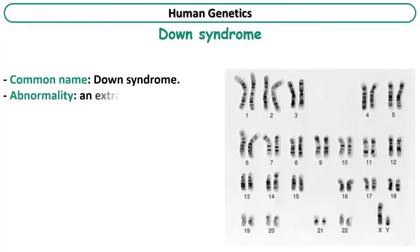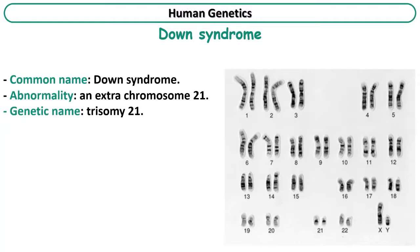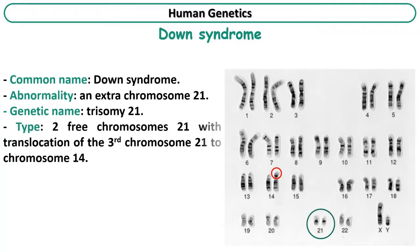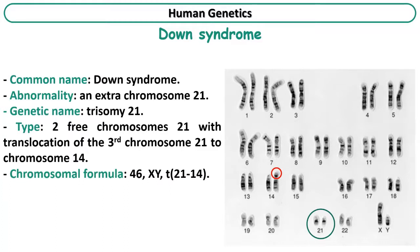This karyotype also corresponds to an individual affected with Down syndrome. But where are the three chromosomes 21? There are two free chromosomes 21, while the third is translocated to chromosome 14, meaning it is attached to chromosome 14. Concerning the chromosomal formula in this case, the total number of chromosomes is 46 despite the translocation. The sex chromosomes are XY, and the translocation is mentioned at the end of the chromosomal formula. The letter T refers to translocation, where a chromosome 21 is translocated to chromosome 14.